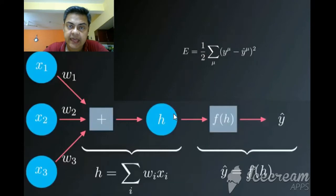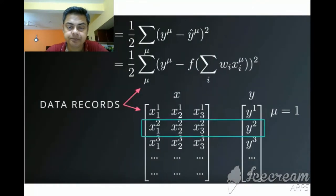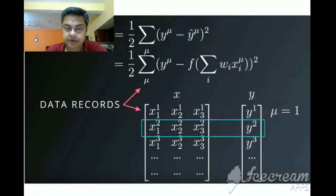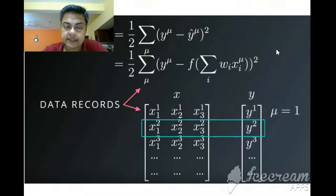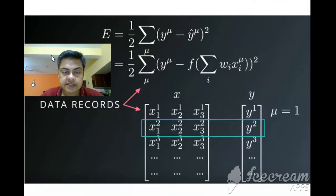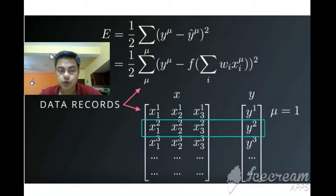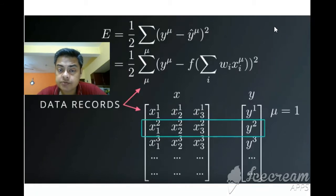From h, they ultimately generate the outcome — the first outcome, which is y-cap. Y-cap is the initial predicted outcome, not necessarily the final outcome. We then calculate the error being generated. The error e is nothing but the difference between actual and predicted values.